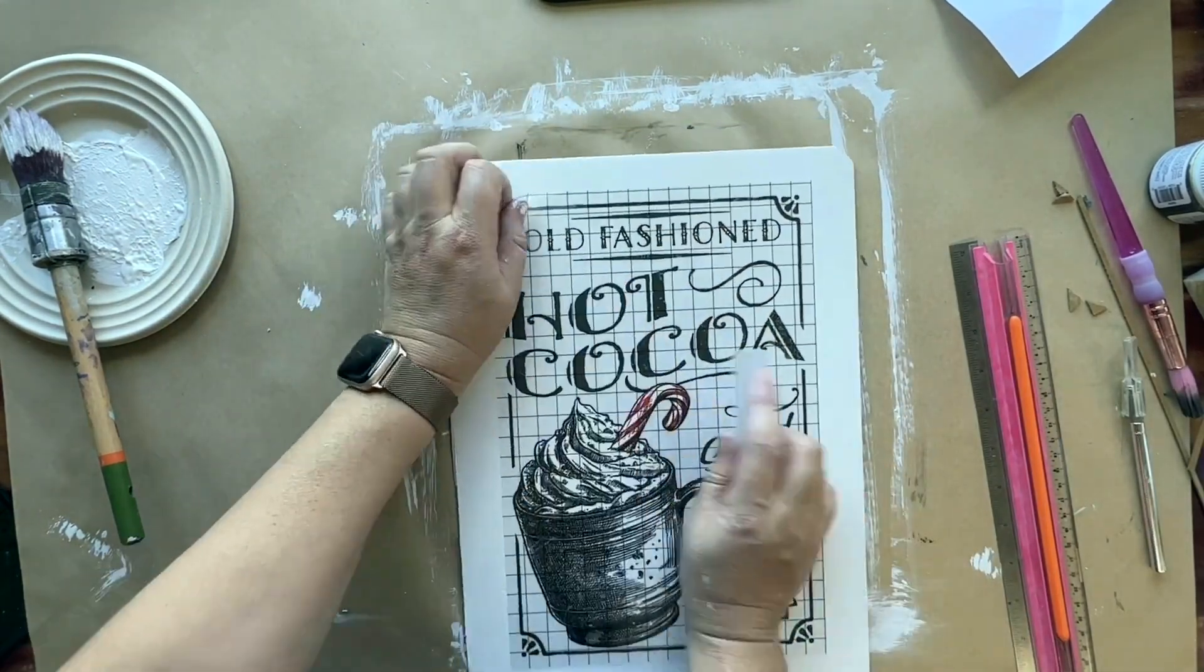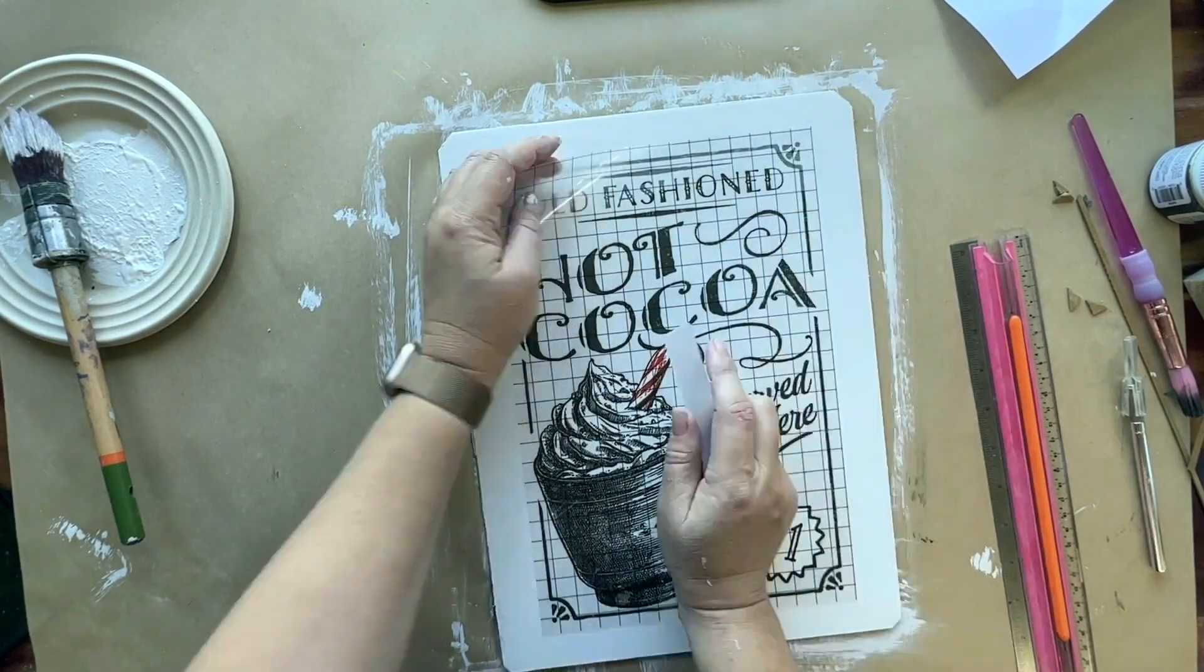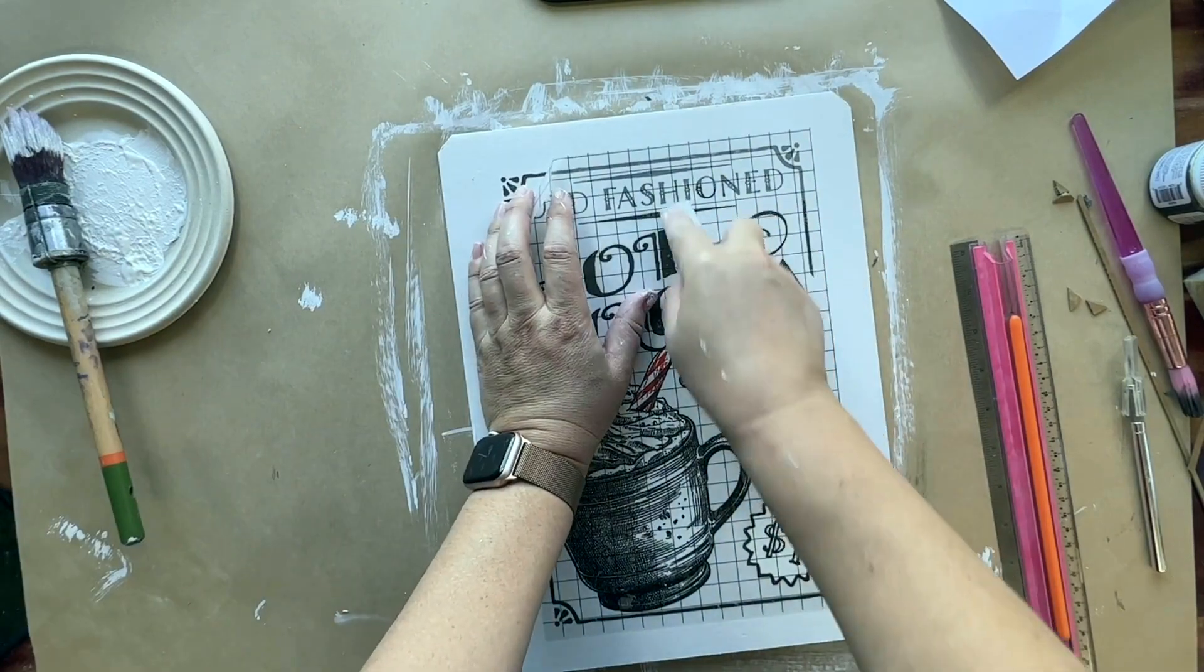If I'm happy with the position, I'm just peeling back the backing sheet at the top and laying it down, and then slowly pulling back the rest of the backing sheet.